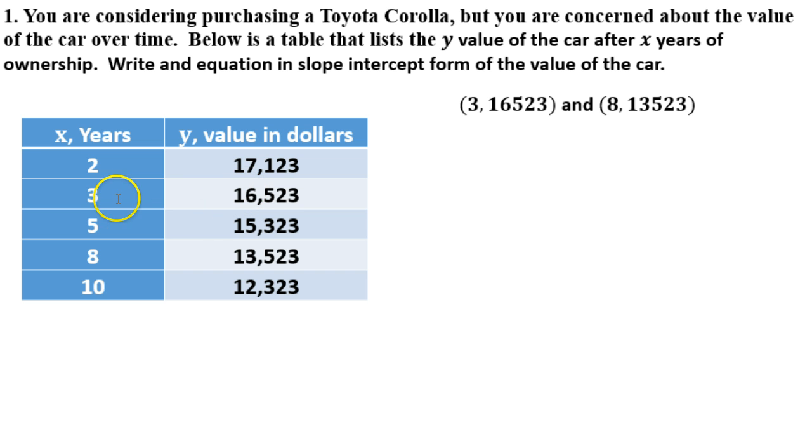What I did is I chose these two: 3 and 16,523, and then my other point was 8 and 13,523. It really doesn't matter because all of these change at the exact same rate. I just chose those two to illustrate how to solve this and come up with the equation.